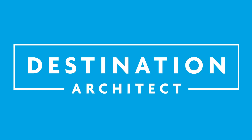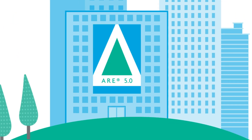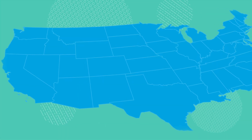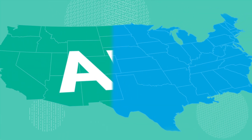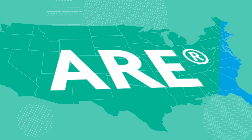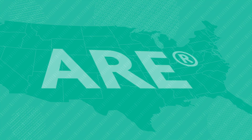To earn a license, you'll need to pass the Architect Registration Examination, or A.R.E. The exam is required by all U.S. states and territories, and it's designed to test your knowledge and skills about the practice of architecture.